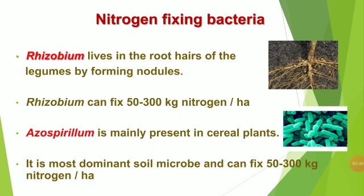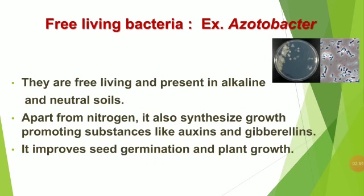Azospirillum is mainly present in cereal plants. It is the most dominant soil microbe and can fix 50 to 300 kg of nitrogen per hectare. The second example of free-living bacteria is Azotobacter. They are free-living and present in alkaline and neutral soils. Apart from fixing nitrogen, they also synthesize growth-promoting substances like auxins and gibberellins, and improve seed germination and plant growth.